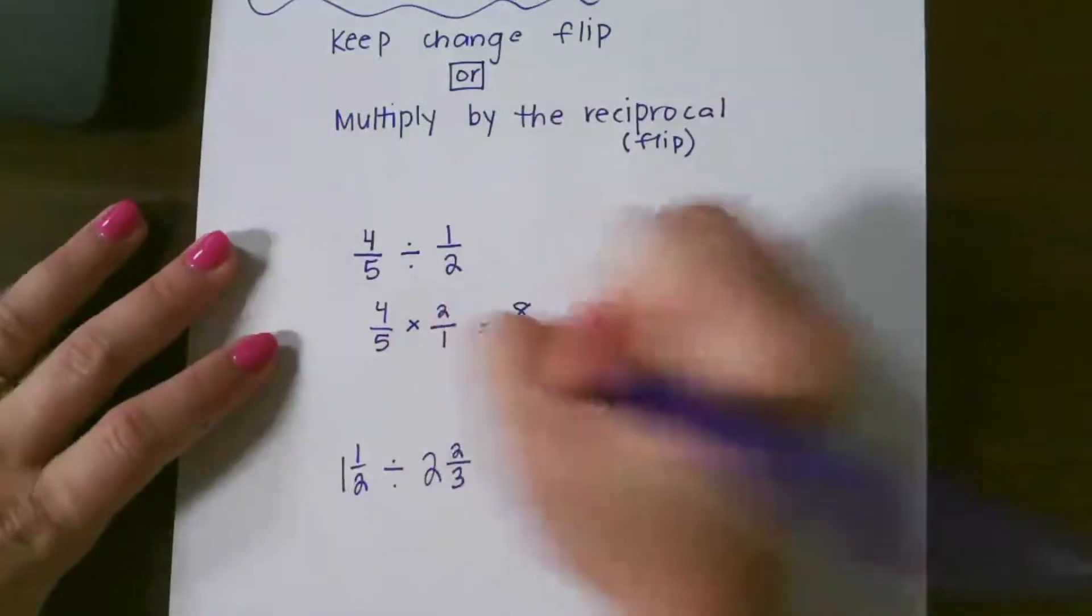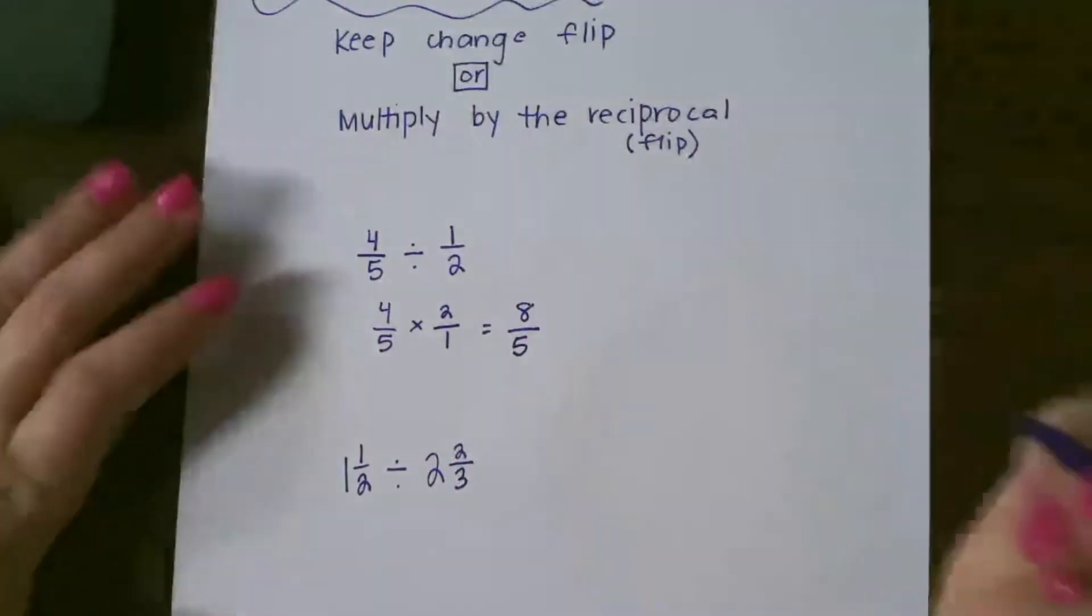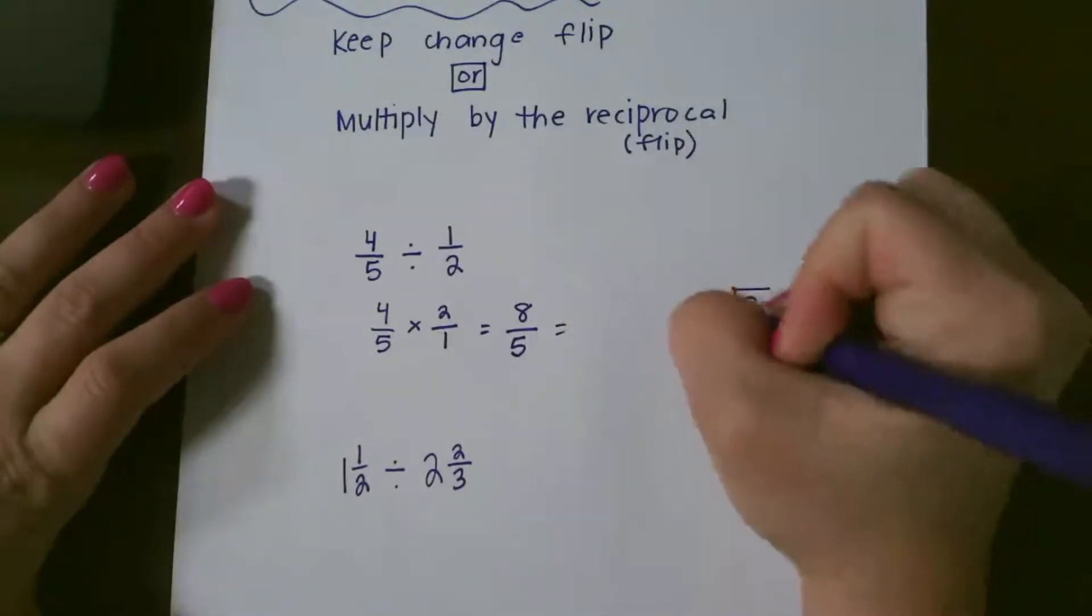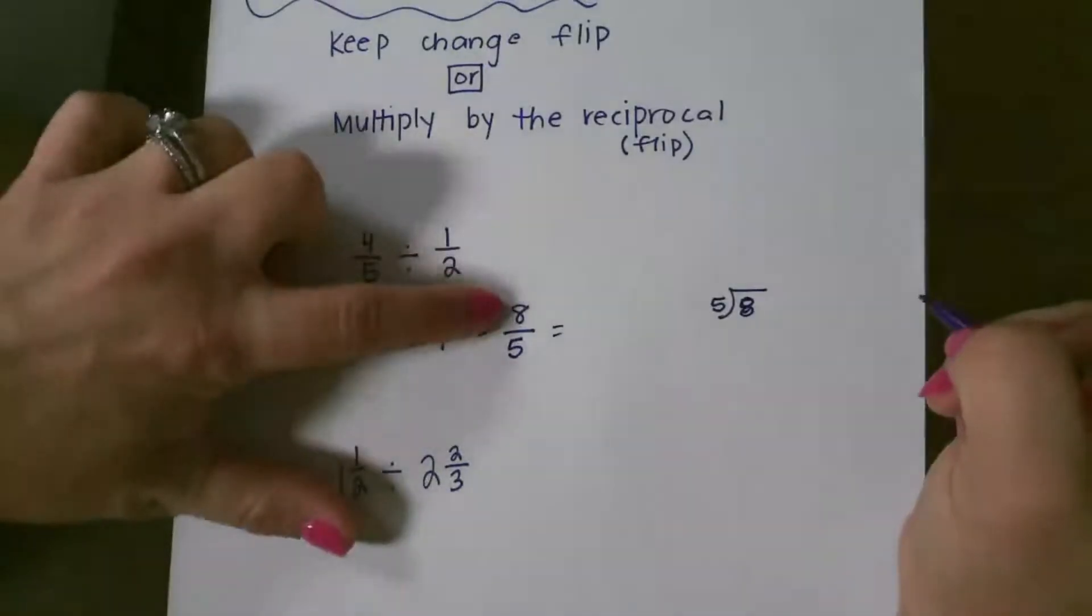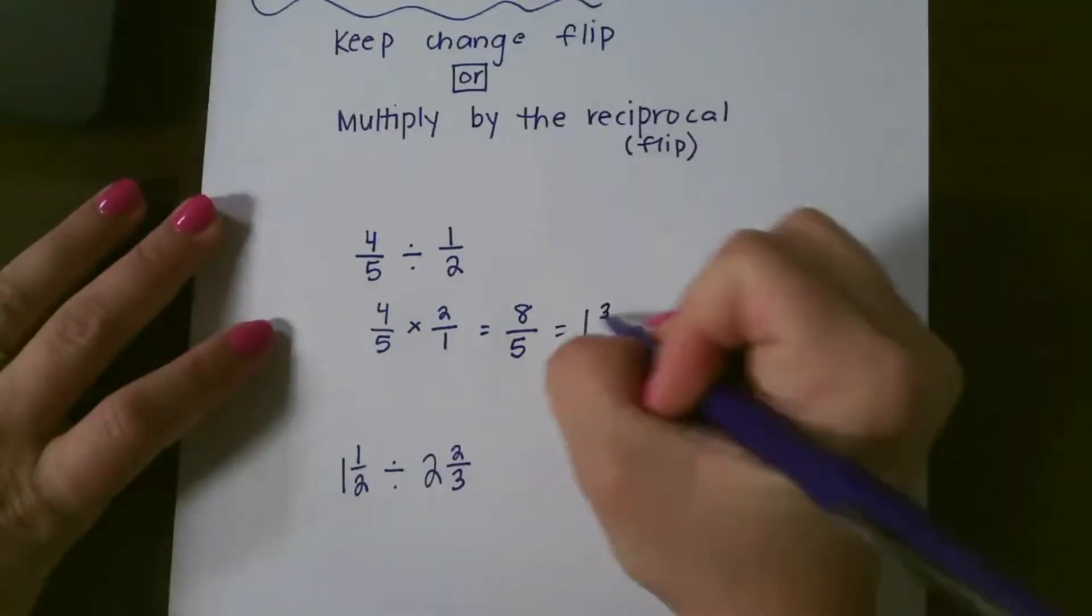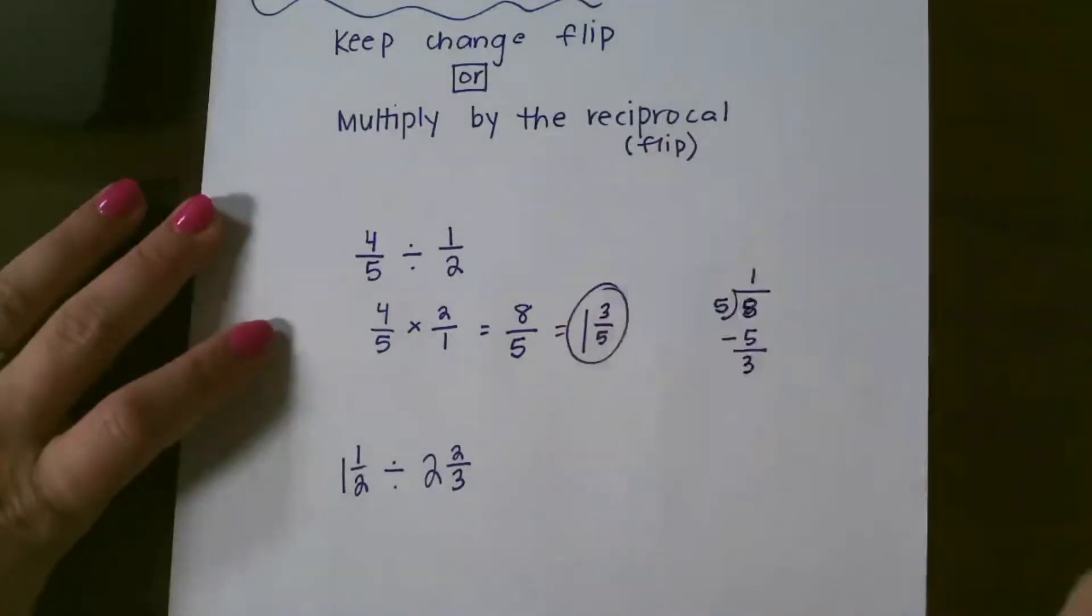4 times 2 is 8, and 5 times 1 is 5. Then we can't leave this like this, so we have to figure out what that's going to be. So we do numerator divided by denominator. 5 goes into 8 one whole time with 3 left over, so that would be 1 and 3 fifths.